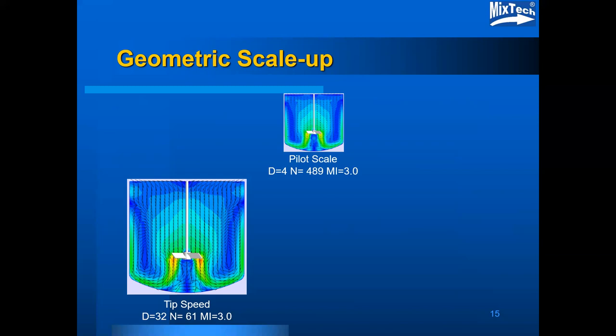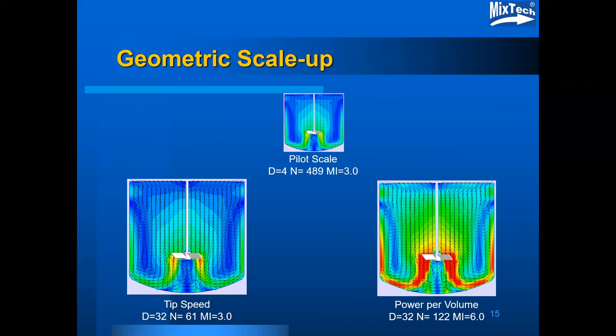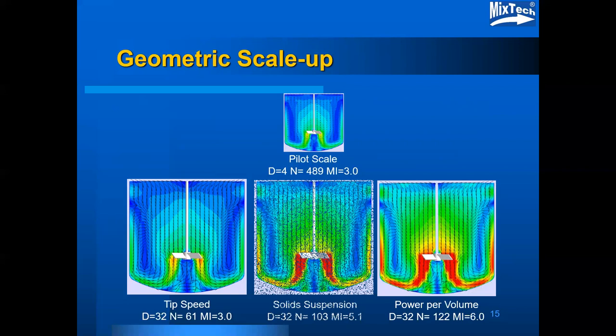If we do a scale-up to equal power per volume, we end up with a higher rotational speed than for tip speed — in fact, as a coincidence of the scale ratio chosen, the rotational speed is now double what it was for tip speed. The power per volume mixing index scale-up gives 6.0 rather than 3.0 for the small scale. A solid suspension scale-up falling between these two has a speed between tip speed and power per volume, and a mixing index of 5.1, which is also in that range.